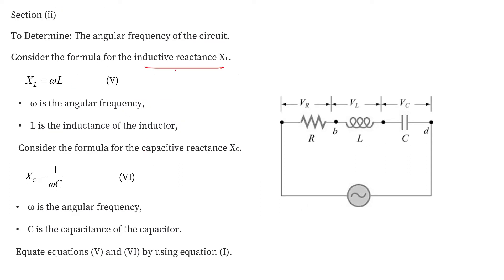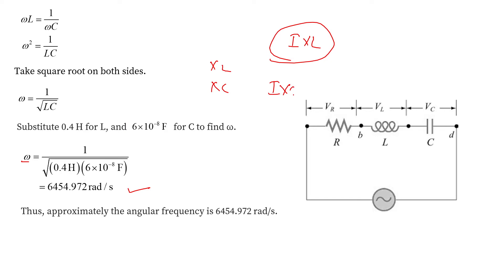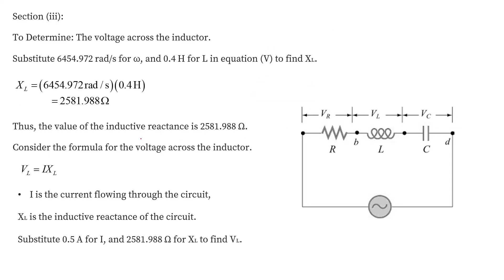The inductive reactance is XL = ω·L and the capacitive reactance is XC = 1/(ω·C). Substituting ω = 1/√(LC), the angular frequency comes out to be 6454.972 rad/s. Using this value, XL = ω·L = 2581.988 Ω.